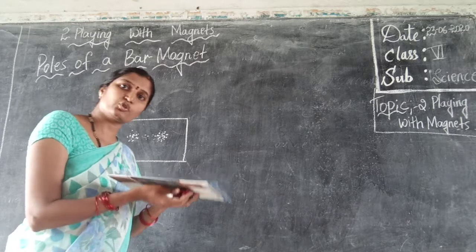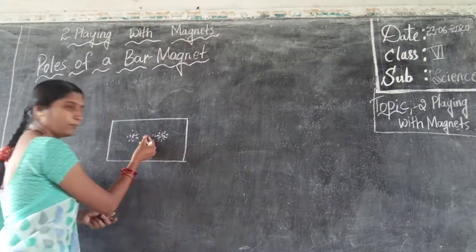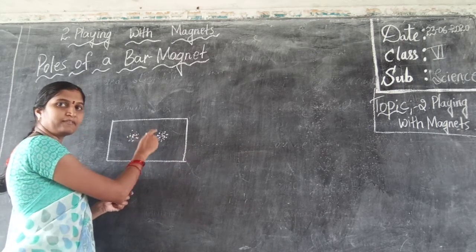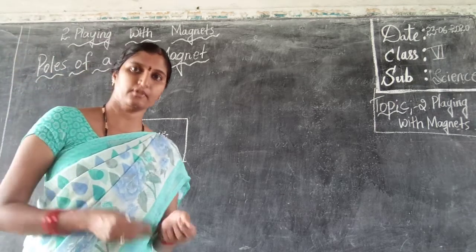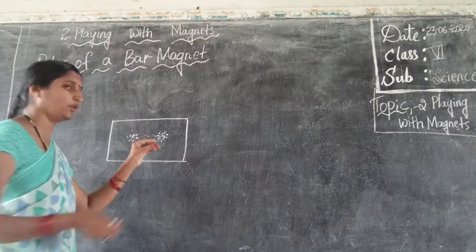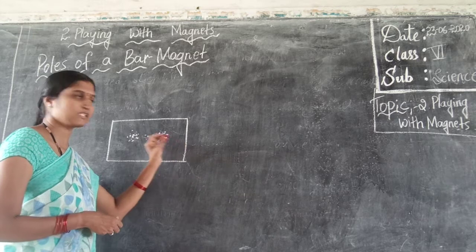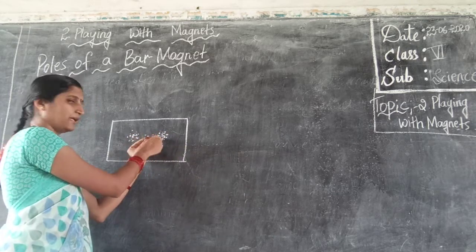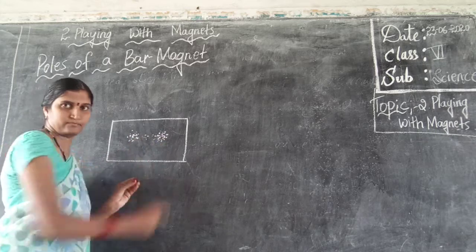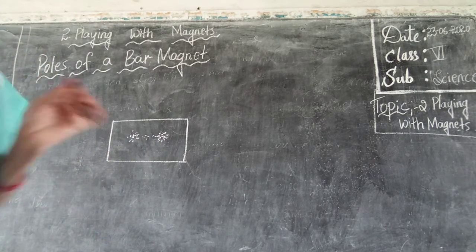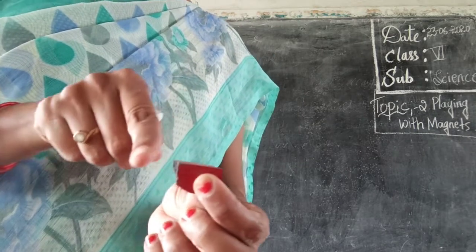The more iron particles are attracted towards the ends — towards the poles of the magnet. This shows that there is a pole at each end. One we call the north pole and another we call the south pole. By this activity, we learn that iron filings are more attracted towards the two ends of a bar magnet. These two ends of a bar magnet are called the poles of the magnet.